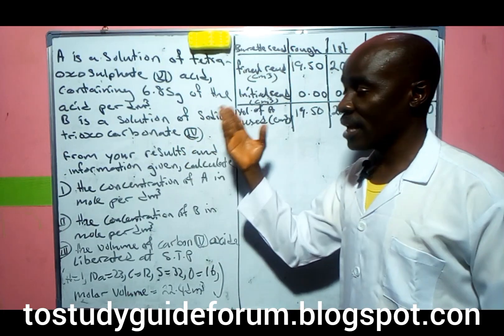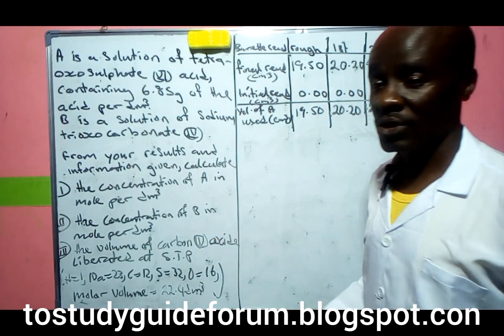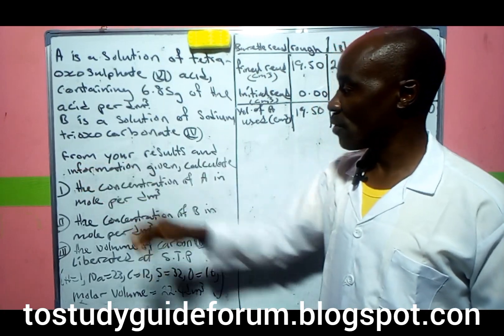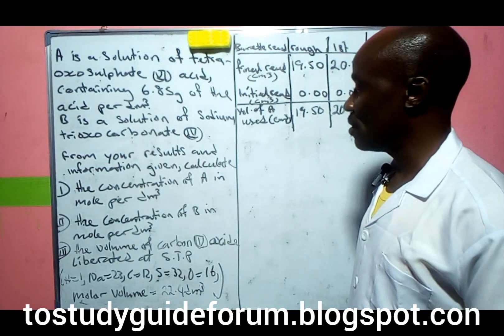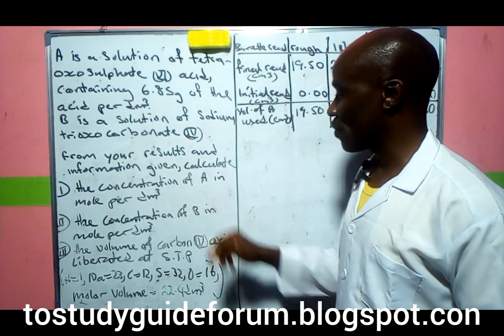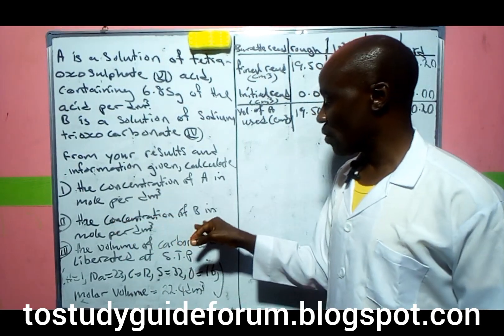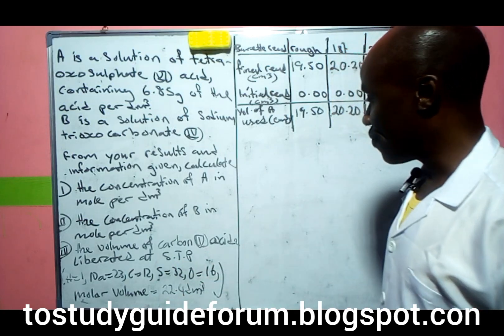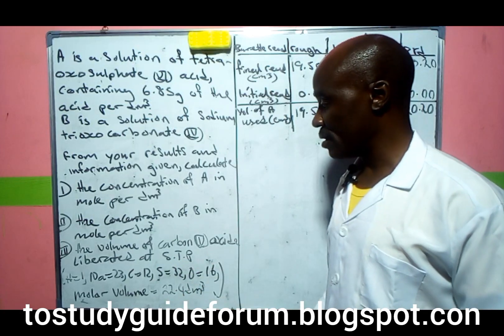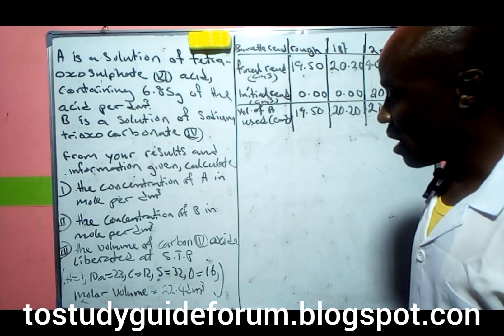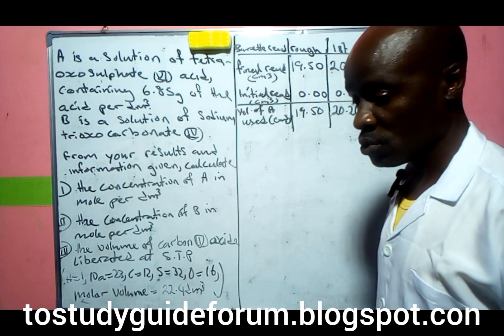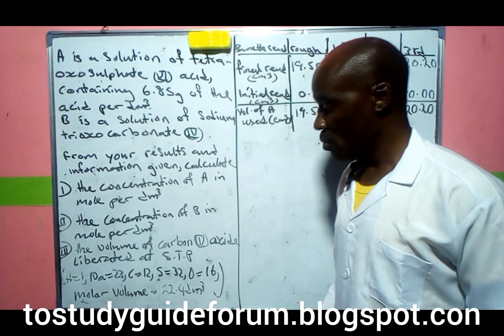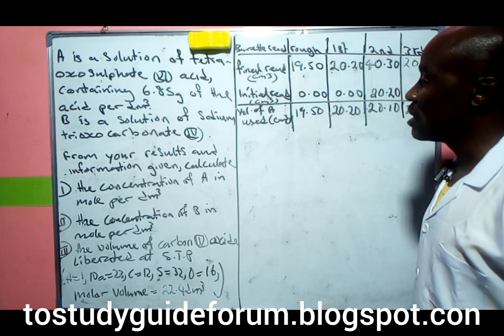The instructions say to carry out the practical analysis. From your results and information given, calculate: the concentration of A in mol per dm³, the concentration of B in mol per dm³, and the volume of carbon dioxide liberated at STP with relative atomic masses and molar volume.